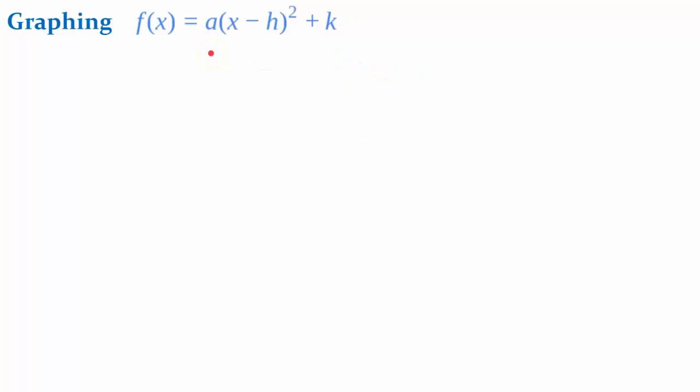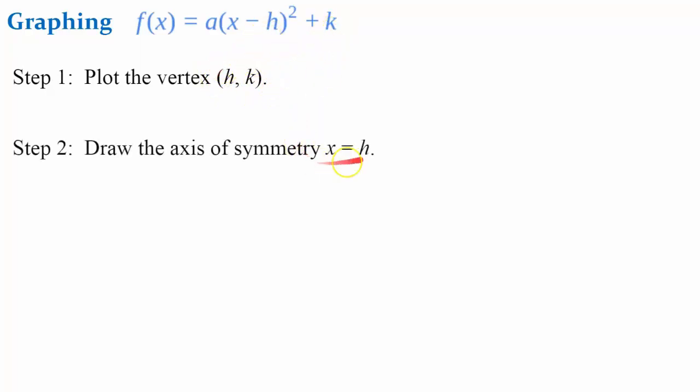Let's go through the steps of graphing a function in vertex form. First, you want to identify and plot the vertex (h, k). Draw the axis of symmetry. It's the line that passes through the vertex, a vertical line.